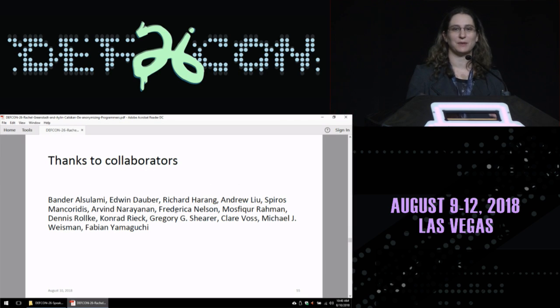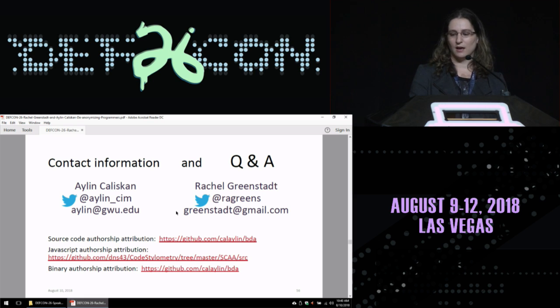This was not work done just by Eileen and myself alone. I have lots of students and other collaborators at Drexel University and at Princeton and at the Army Research Lab and at Goddagen in Germany who have all worked on various aspects of this project. So thanks to Bandar, Edwin, Rich, Andrew, Spiros, Arvind, Frederica, Mosfiker, Dennis, Conrad, Greg, Claire, Mike, and Fabian for all of their contributions to this work. This is our contact information. Our code to do all of this stuff, so if you actually want to try and figure out who Satoshi Nakamoto is and have an actual suspect set, you're welcome to try that. It's not something that we're going to do. We respect privacy. But the code is out there. We have about four-ish minutes per question. If people have some questions, we would love to take them. And then after the talk, we'll walk out the back and you can ask any more questions that you have. Thanks.